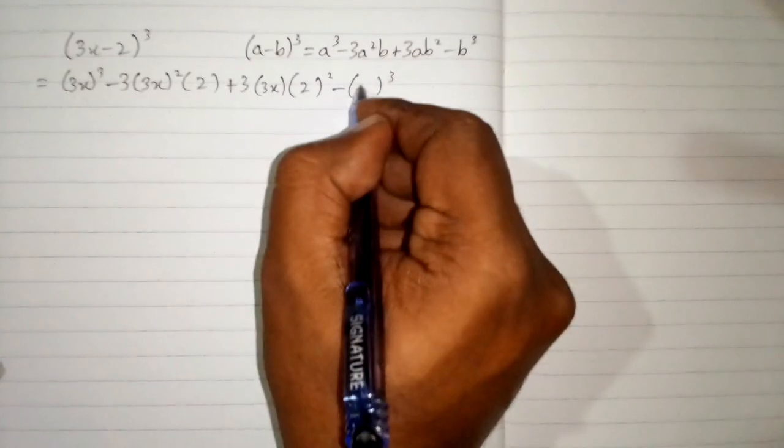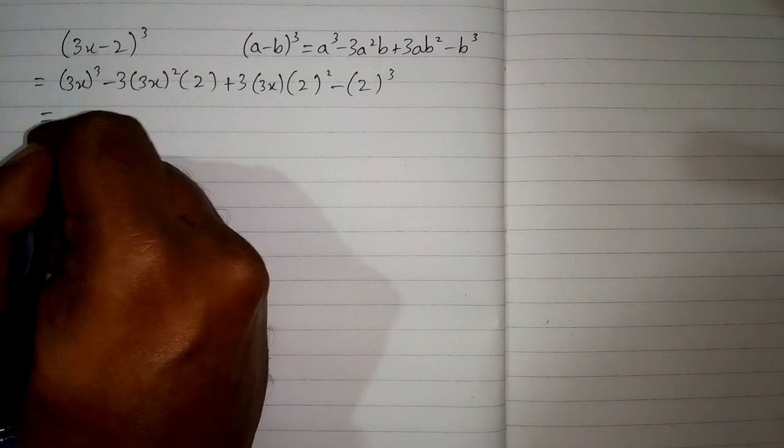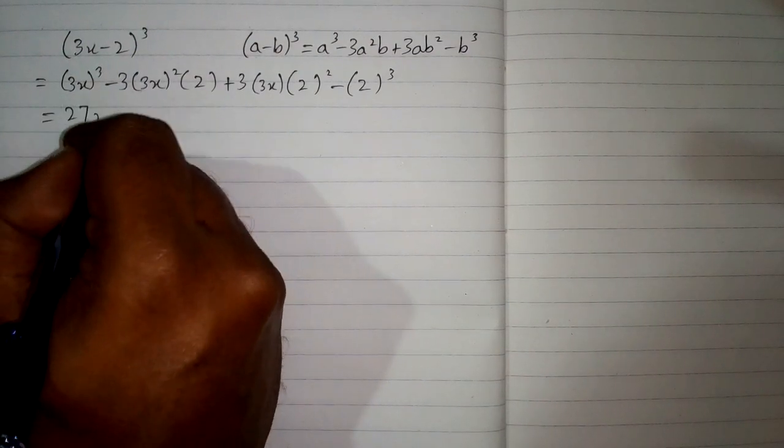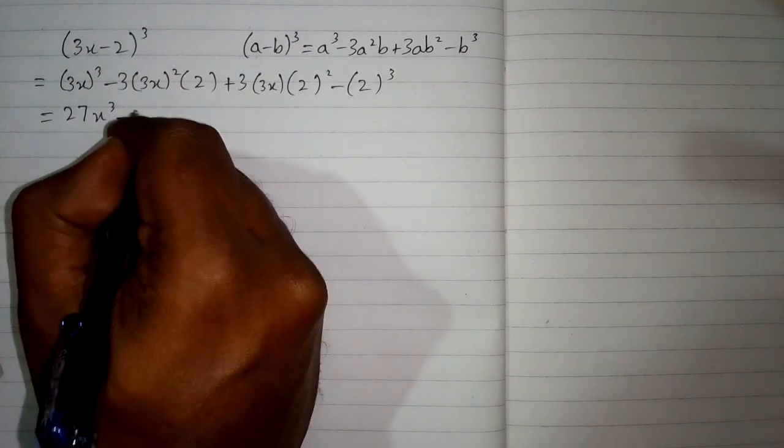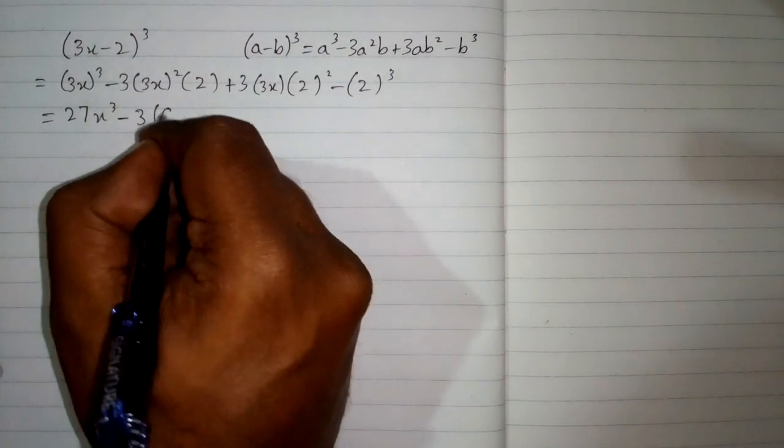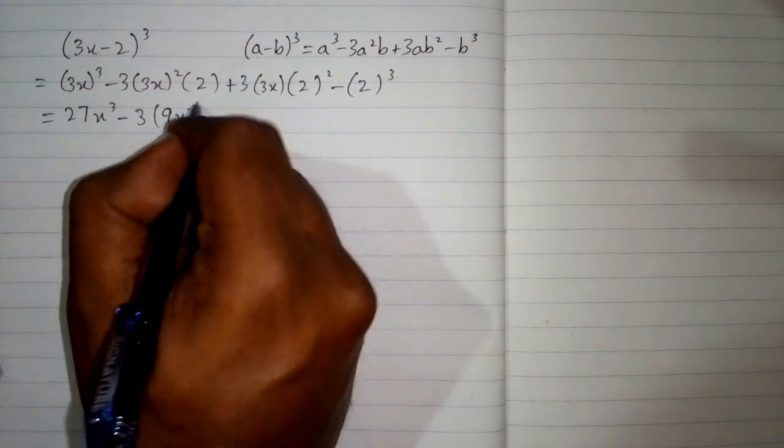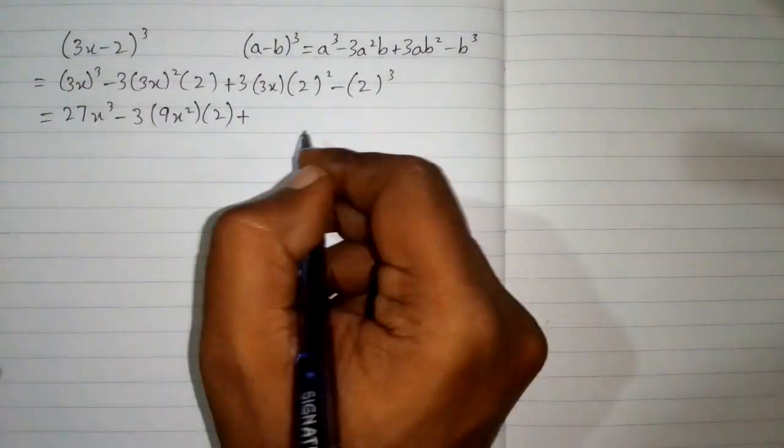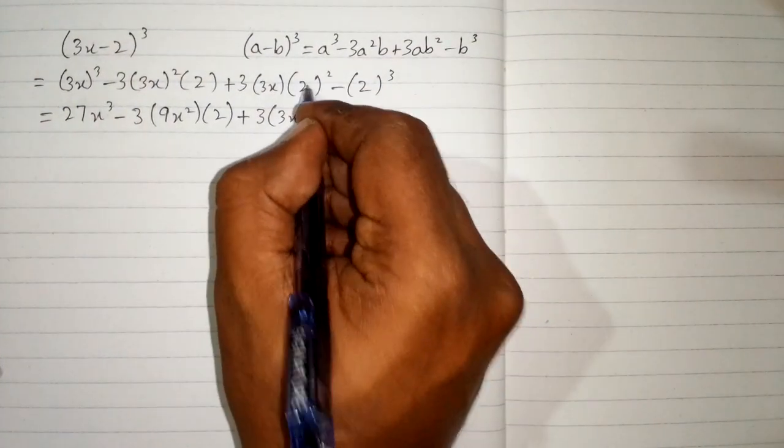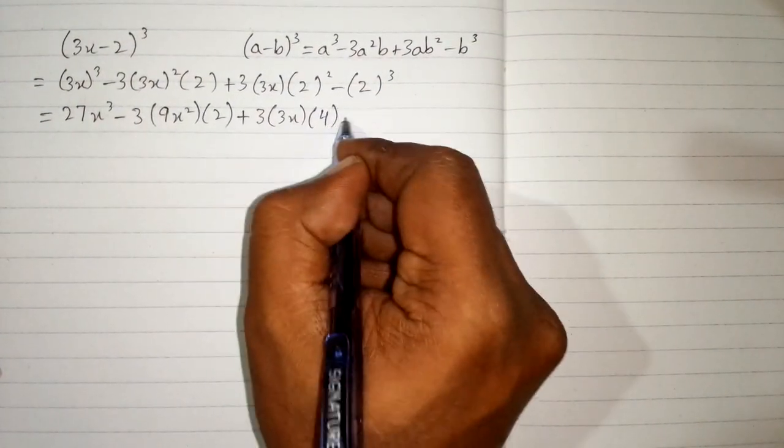Now the cube of 3 is 27 and cube of x is x cube and minus 3 times square of 3 is 9. So we have 9x square multiplied by 2 plus 3 times 3x and the square of 2 is 4 and minus cube of 2 is 8.